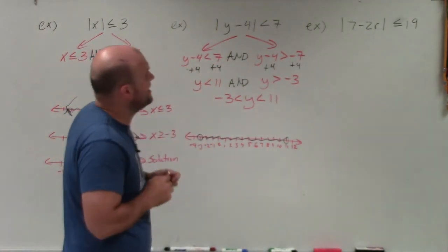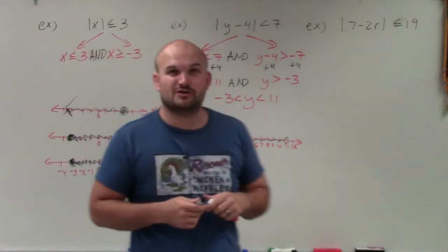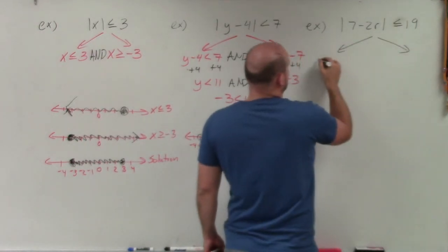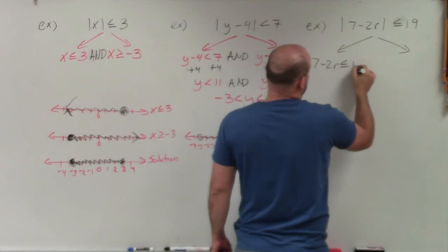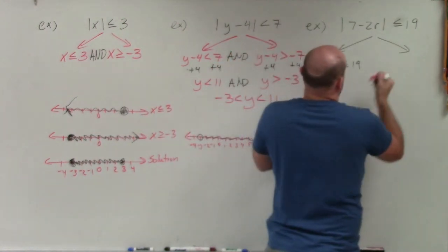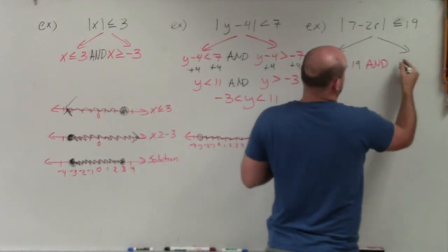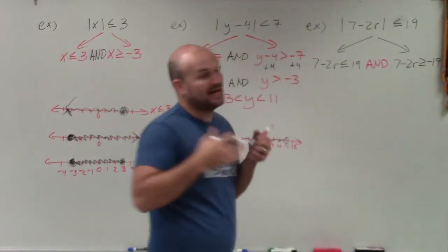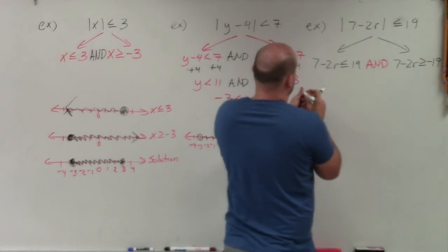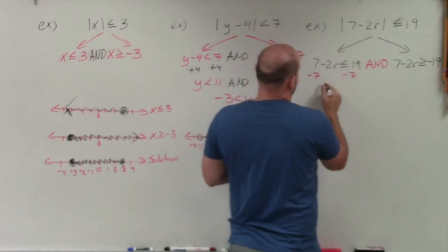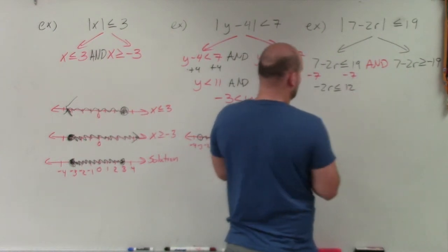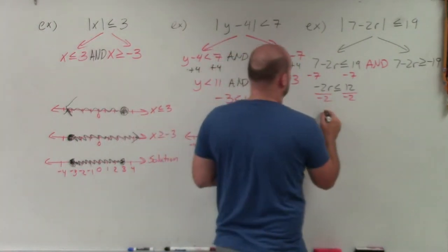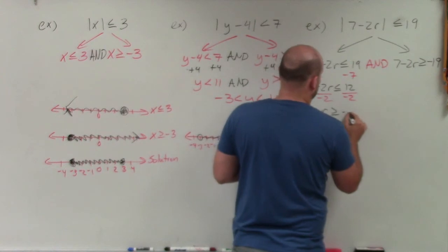Now let's get into the last example: 7 minus 2 times the absolute value of 7 minus 2R is less than or equal to 19. We go through the same process — I'll create my two cases. First case: 7 minus 2R is less than or equal to 19, just rewriting without the absolute value. Second case: 7 minus 2R is greater than or equal to negative 19 — remember we flip the sign and negate. Solving the first: subtract 7 from both sides, giving negative 2R is less than or equal to 12. Then divide by negative 2, and since we're dividing by a negative we flip the sign again, giving R is greater than or equal to negative 6.